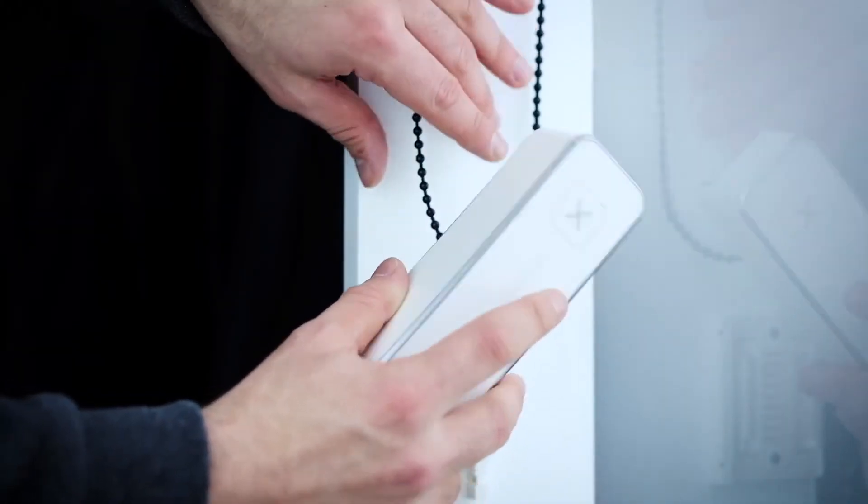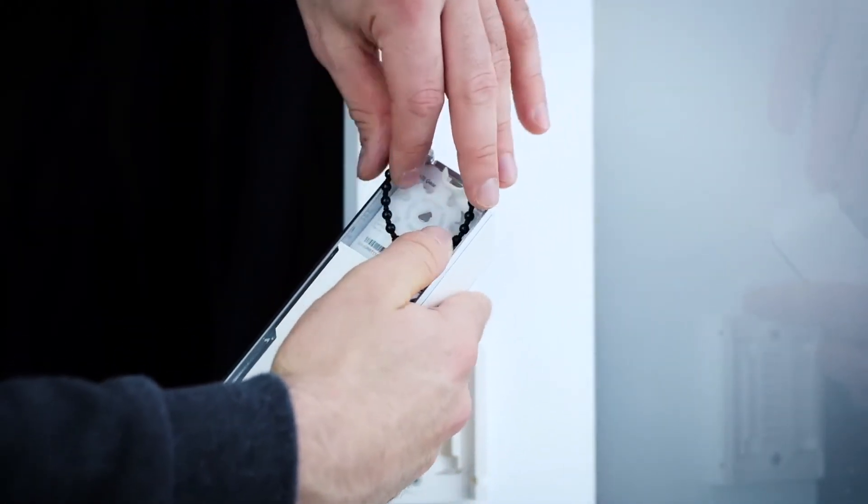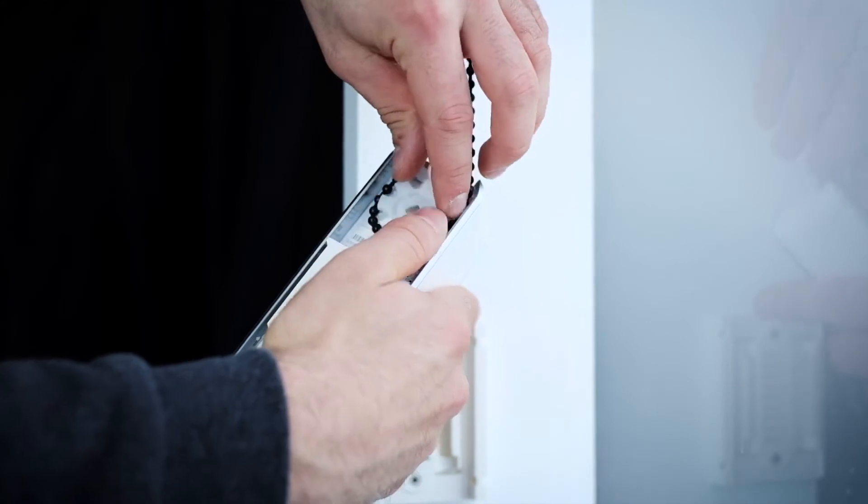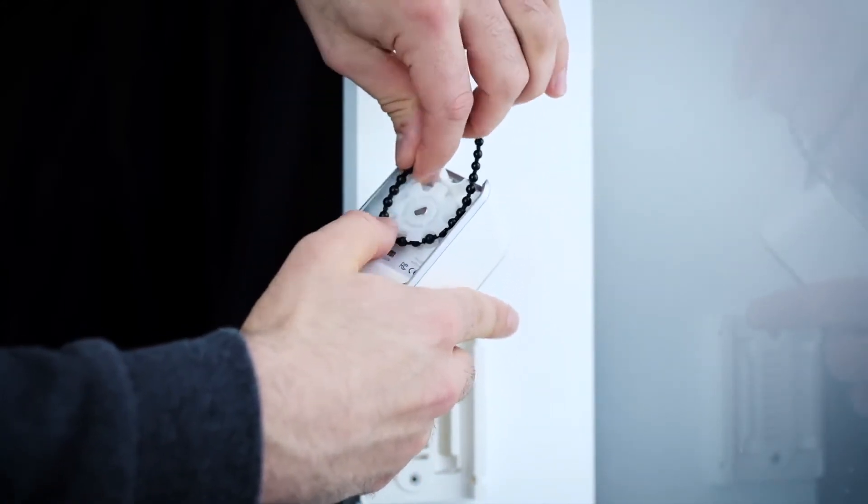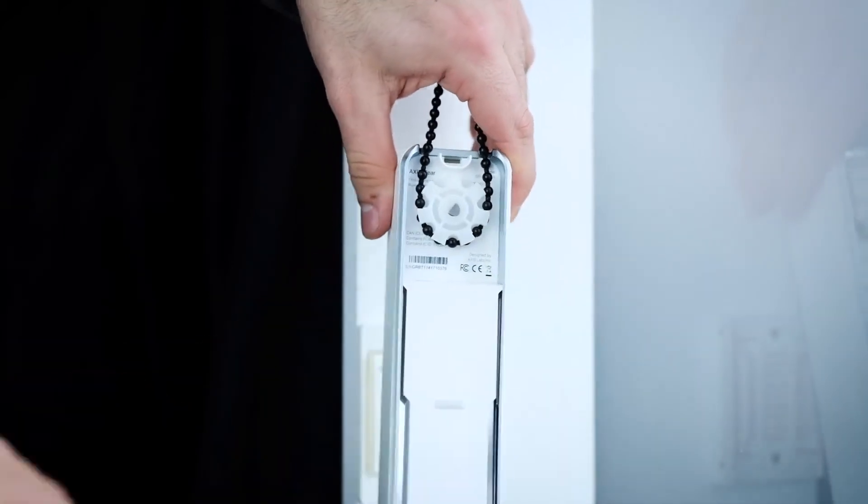After firmly securing bracket to the frame, remove positioning tool. Loop your plastic or metal beaded chain onto gear, making sure the loop is even on both sides. Make sure that your loop is also not twisted.